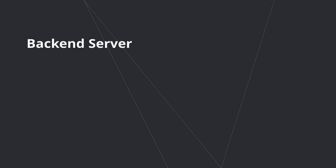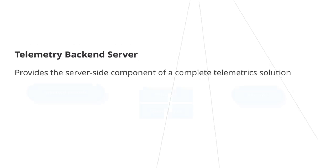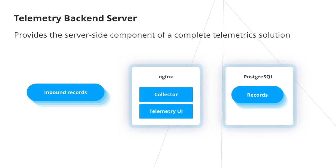The back-end server provides the server-side component of the telemetrics solution. It consists of an Nginx web server and two Flask apps: the collector, an ingestion app to receive records from telemetrics client probes and write them to the PostgreSQL database; and the Telemetry UI, a web app that exposes several views to visualize the telemetry data and also provides a REST API to perform complete remote queries. The back-end server can be deployed on systems running Clear Linux, Ubuntu, or CentOS. On Clear Linux, you can use the SWUPD service to install and ensure the system is kept updated.